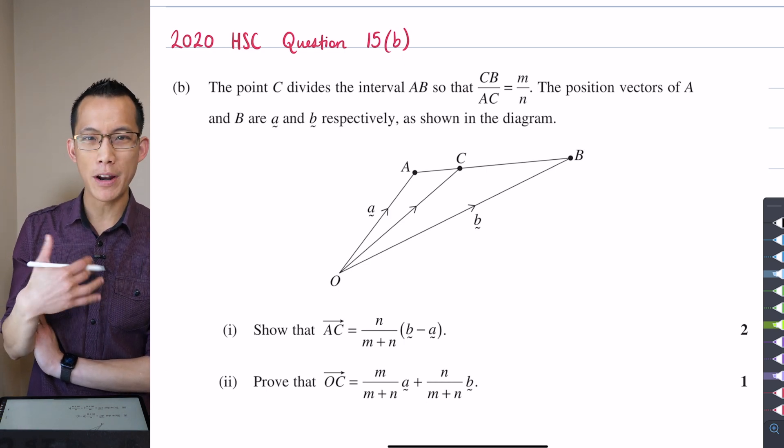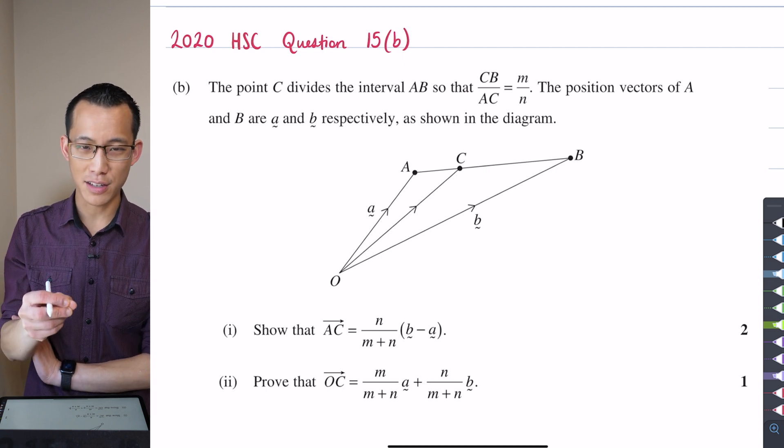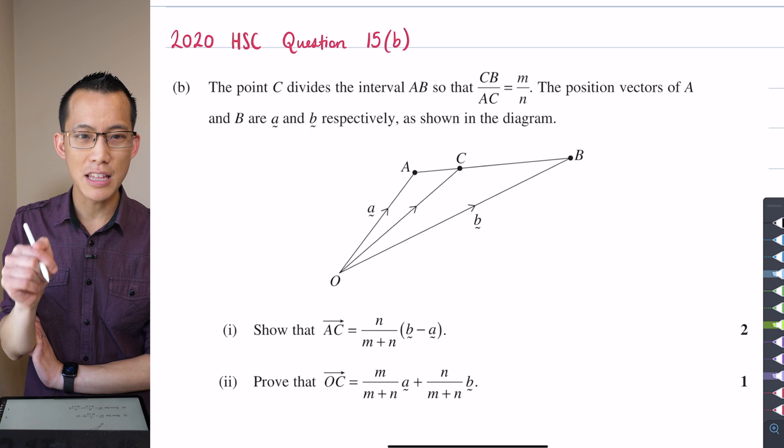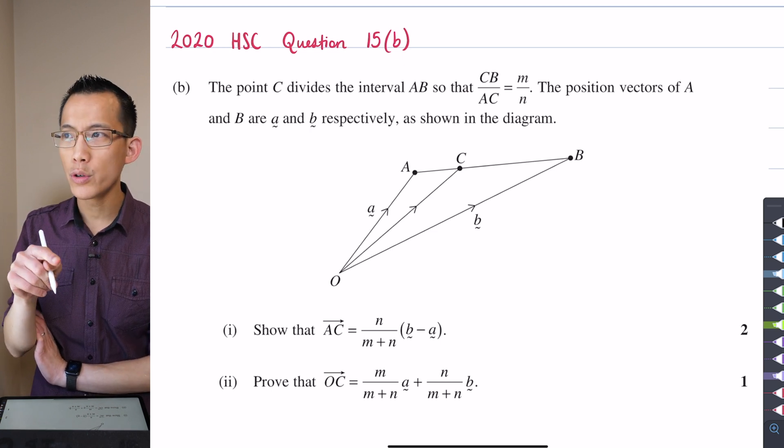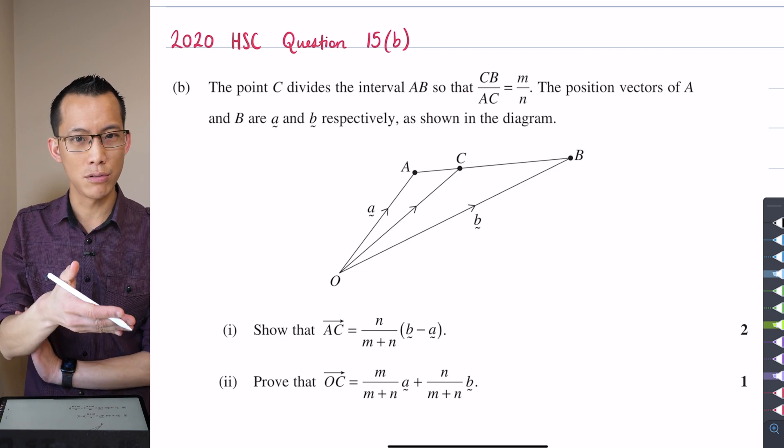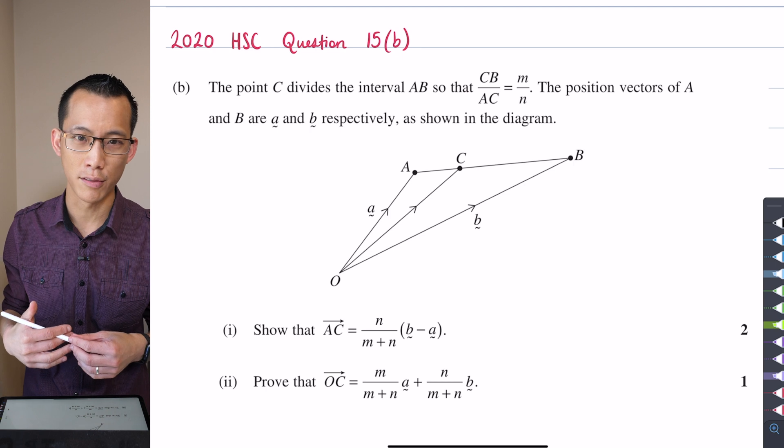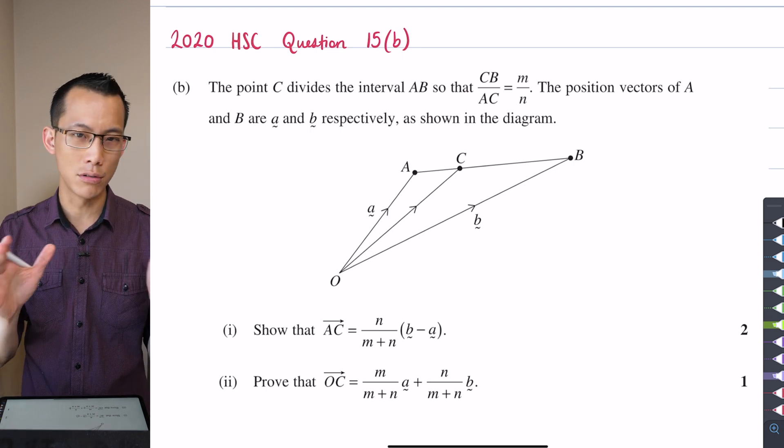When I read someone else's solution, especially with proof questions like this, the most valuable part is not present in the written solution. The most valuable part is why would such a person think to take such a line of reasoning? What made them think to connect this side and this angle?